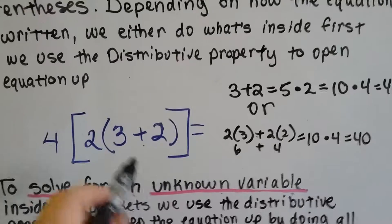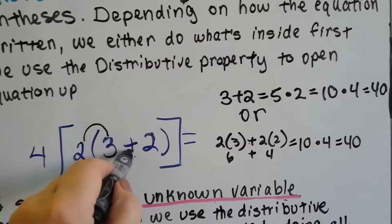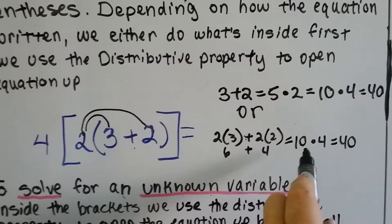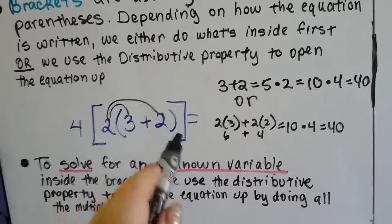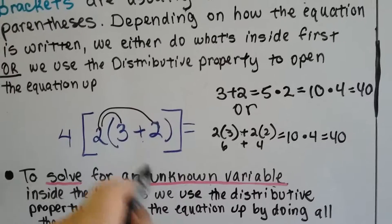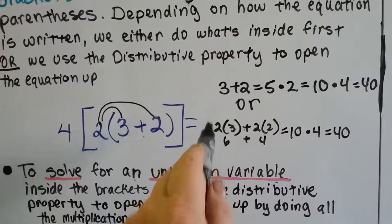Or we could have gone 2 times 3 is 6 plus 2 times 2 is 4, that gets us 10, and then multiply this whole 10 by the 4 to get 40. Either way, we could have opened it up or we could have started on the inside, but there was no variable inside and we don't have anything on the other side of the equal sign.